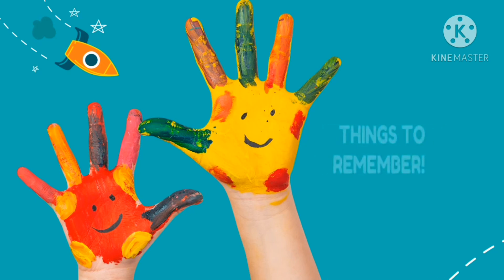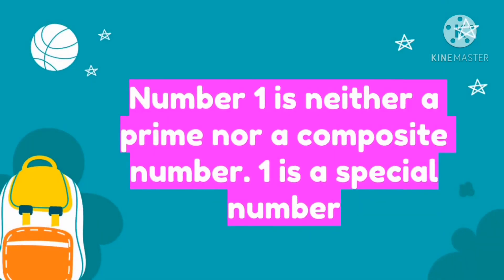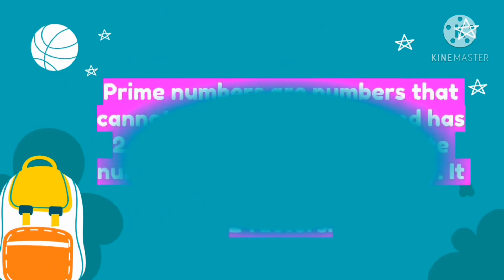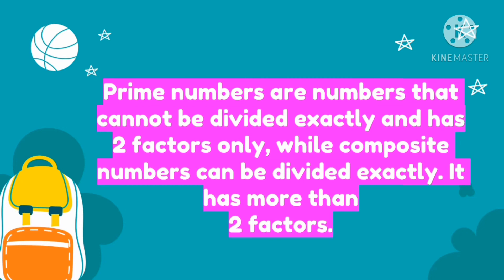So here are the things that we need to remember in differentiating prime numbers from composite numbers. Number 1 is neither a prime nor a composite number. 1 is a special number. Because if we think about it, what are the factors of 1 that when multiplied, the answer is 1? The answer is 1 times 1. So we would keep getting the factors of 1 and if we think of it as composite or prime, we would keep repeating endlessly. That's why 1 is a special number. Prime numbers are numbers that cannot be divided exactly and has 2 factors only. While composite numbers can be divided exactly and it has more than 2 factors.